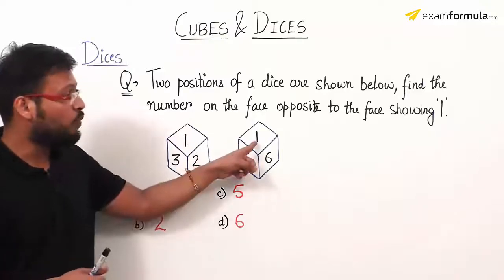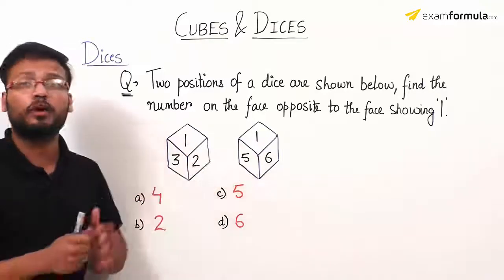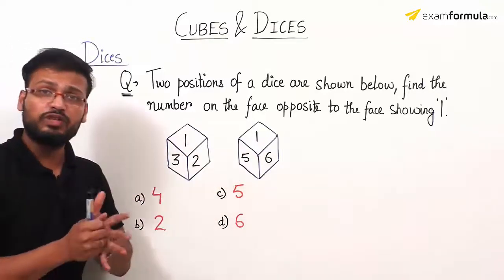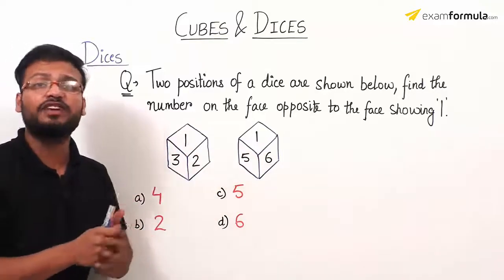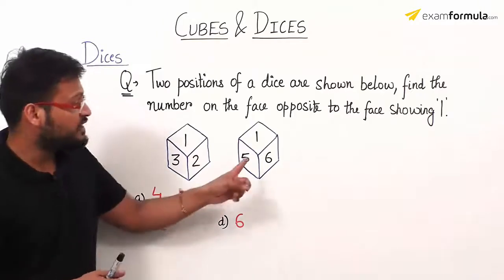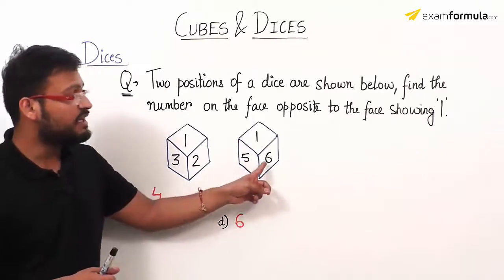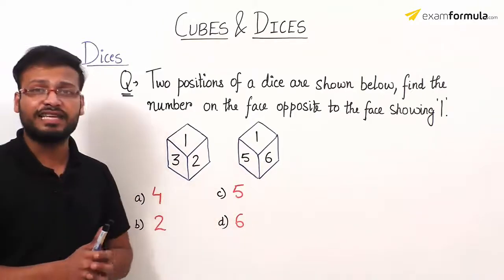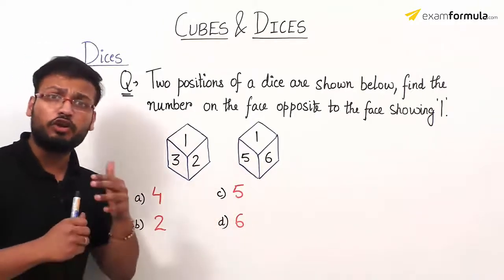In the second figure, 1 is again on the top surface. Its adjacent faces show different numbers. In those adjacent faces, the numbers appearing are 5 and 6.